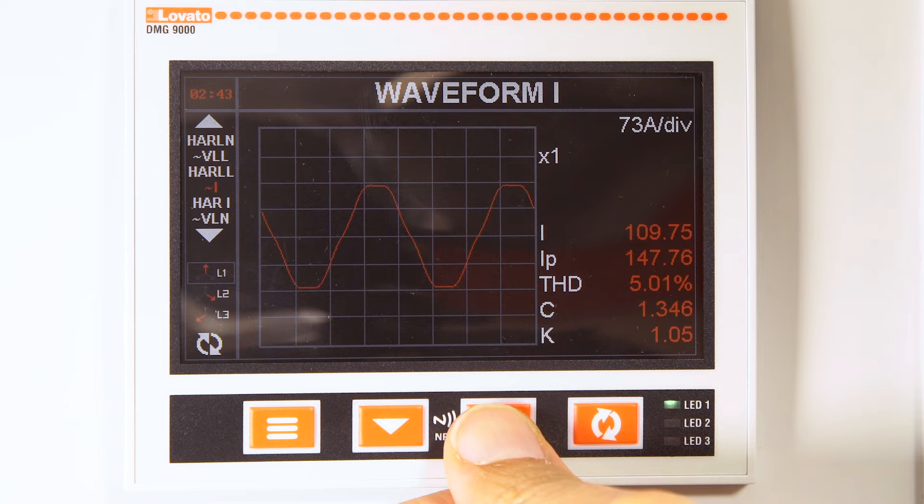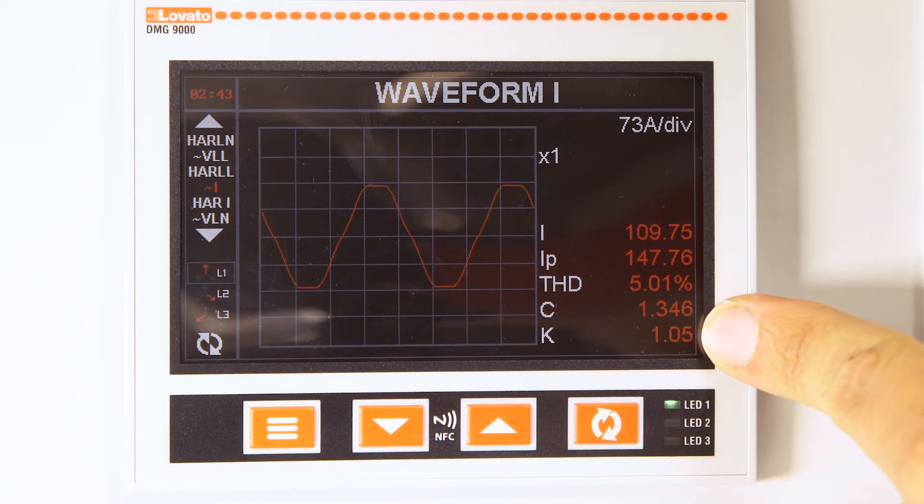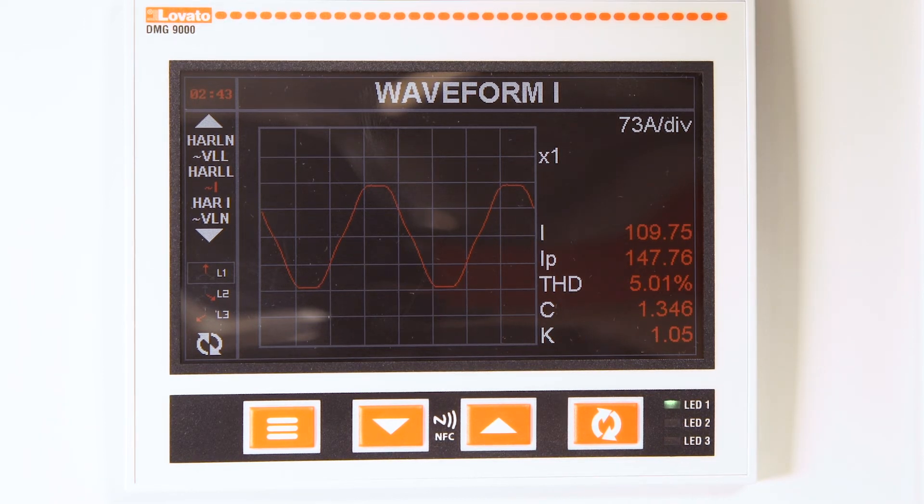The load k-factor, which is the sum of the squares of the products of the RMS value of the harmonics by the harmonic order, is provided by the DMG and helps you to choose and then monitor transformers that have k-factors greater than that of the load.